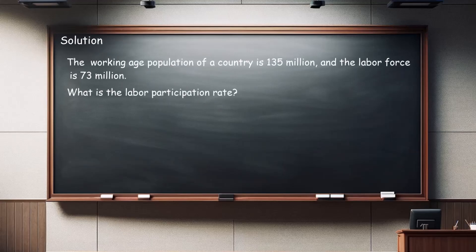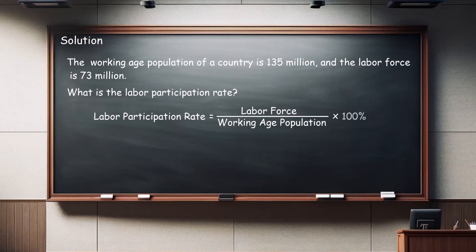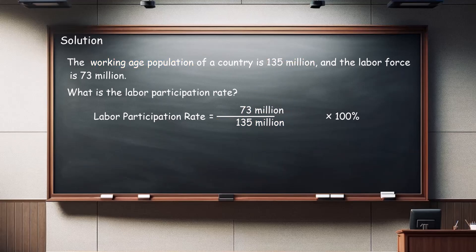First, write down the formula: Labor Force Participation Rate = (Labor Force / Working Age Population) × 100%. Second, substitute the value of the country's labor force from the problem statement into the formula. In this example, the labor force is 73 million. Third, substitute the value of the working age population from the problem — in this example, 135 million — into the formula for the working age population.